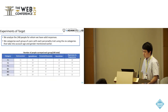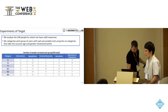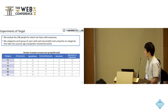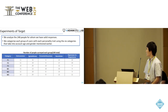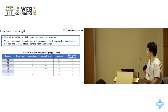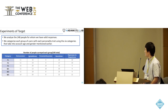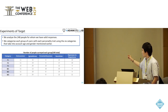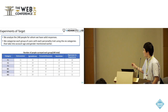We analyze a total of 248 people for whom we have valid responses, and we categorize each group of users by personality trait using six categories that take into account age and gender. This table shows the number of subjects in each group.